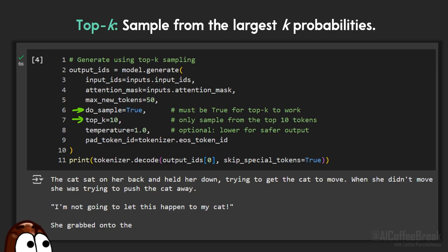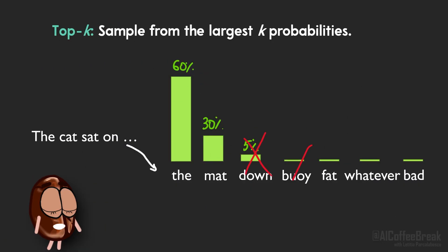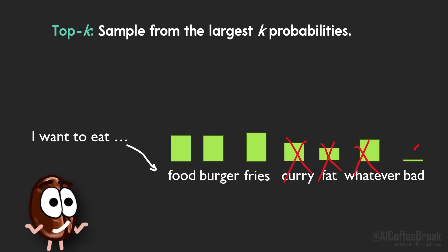But it also has a drawback. The threshold k is fixed. Sometimes the top k tokens capture 95% of the total probability mass, other times they only cover very little of the total probability mass. So k doesn't always adapt well to different situations. That's why researchers came up with a more flexible method to make top-k smarter.